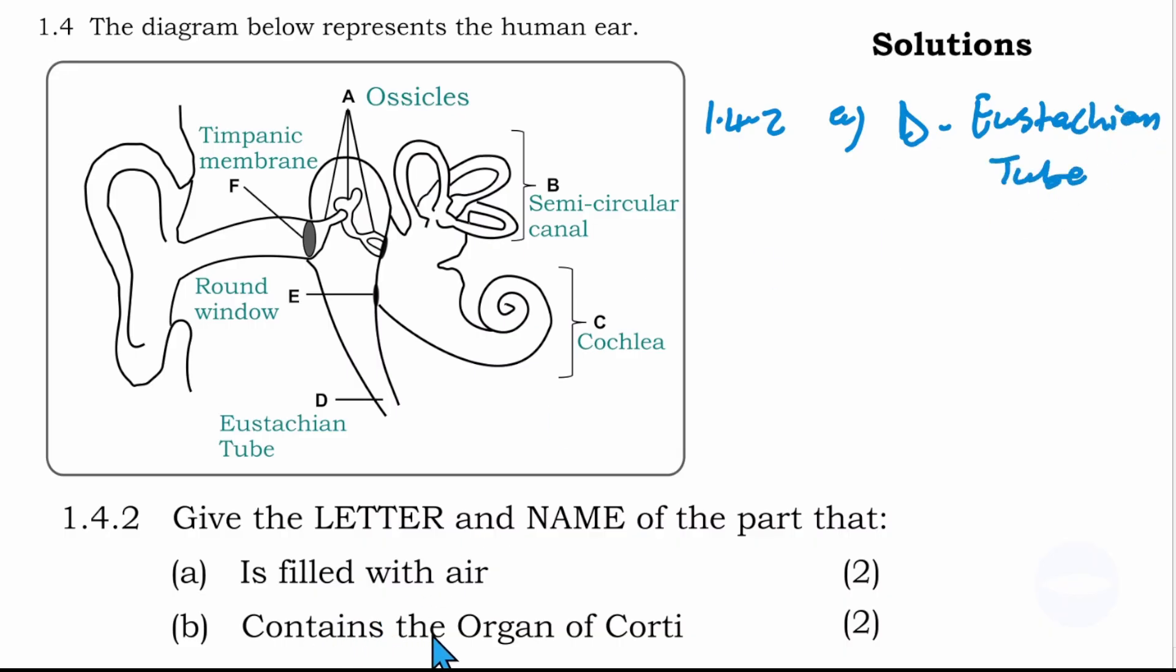Number B: the one that contains the organ of Corti is the cochlea. The organ of Corti is the receptor that takes this information and converts it into impulses so the information can travel to the brain. The brain will then translate this information. The organ of Corti is inside the cochlea. So the letter is C and the name is cochlea.